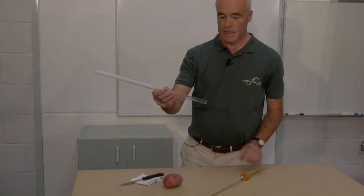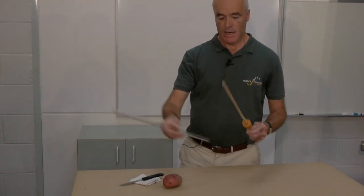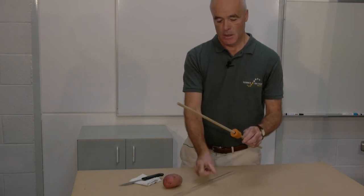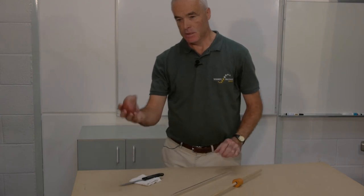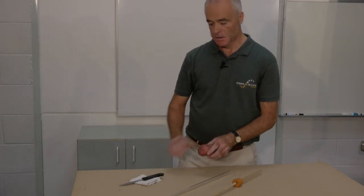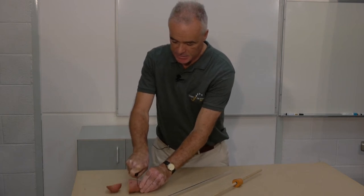The apparatus we're using is a piece of glass tubing with nothing in it other than air. We have a wooden dowel with a rubber stopper on it, and a raw potato which we're going to cut in the fashion I'm showing you.